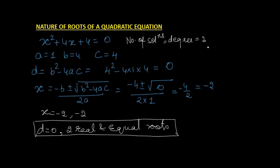Graphically, when we plot this curve, it just touches the x-axis at x = −2 and passes off. There are two values of x — both −2 — which are real and equal when D = 0.